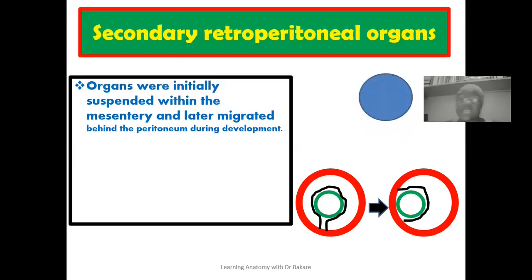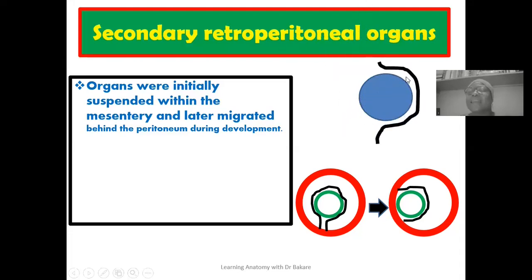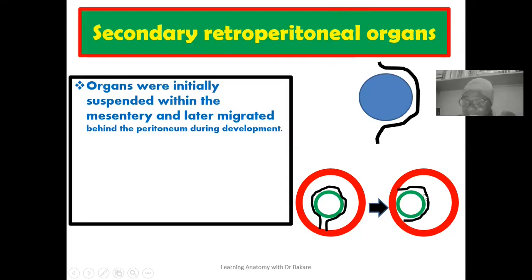Looking at this image, the organ highlighted in blue has the peritoneum lining its lateral and anterior surfaces, highlighted in black, because it has been pushed to the side. The peritoneum follows along with it, helping to hold this organ to the body wall, as clearly presented in the image with the body wall highlighted in red.